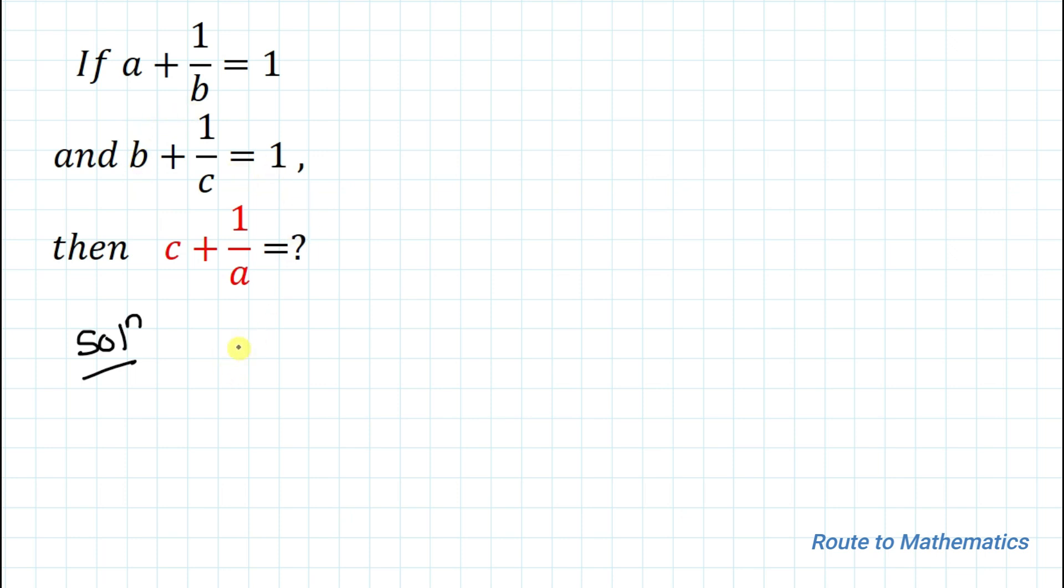So we have two equations. Equation 1 is a + 1/b = 1, and the second equation is b + 1/c = 1.